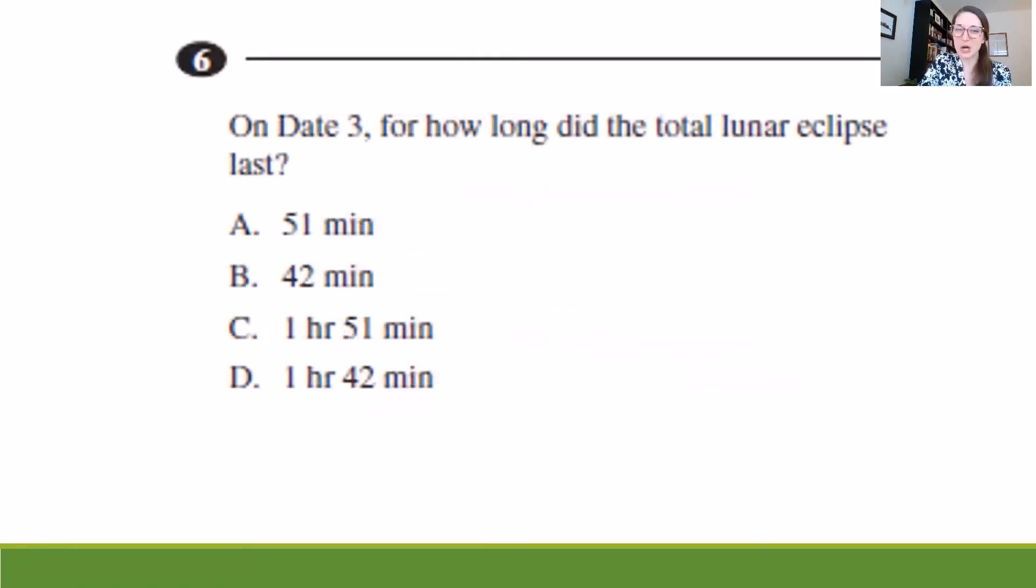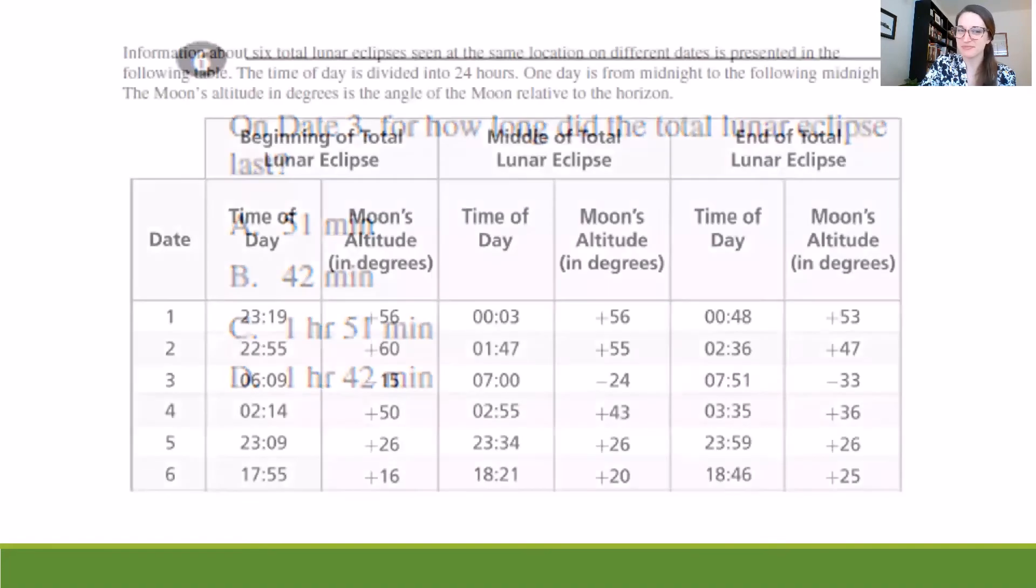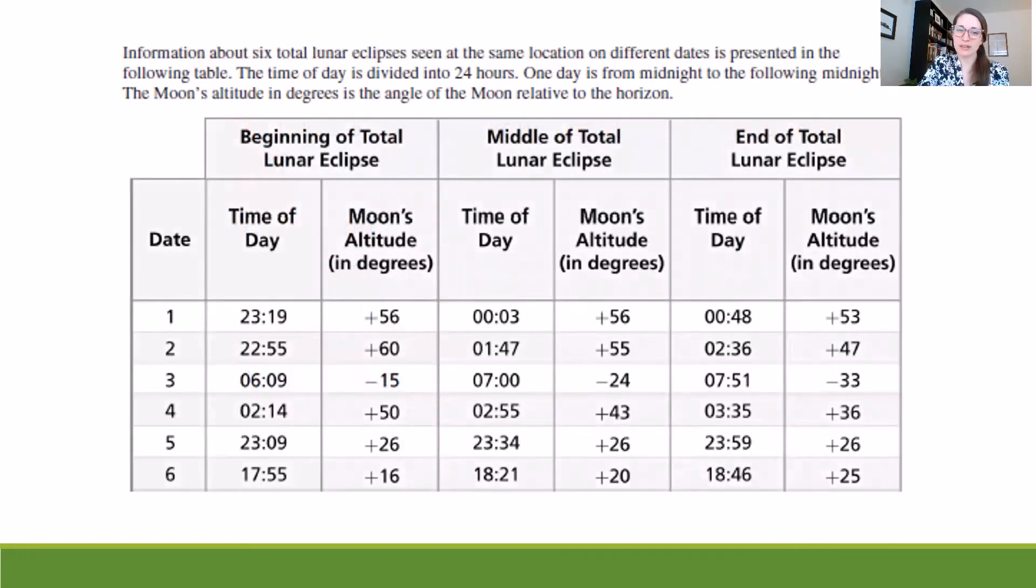For our next question, it says on date three, for how long did the total lunar eclipse last? We have options ranging from as little as 42 minutes to as many as one hour and 51 minutes. Now in order to find this out, I'm remembering that I'm seeing these different times of day and the lengths of the lunar eclipse on the table. So that's where I need to go for my information. I also remember that they said date three. So if you look on the screen there to the left side, you'll see six dates provided. So if I go to date three, how would I figure out how long this lasted?